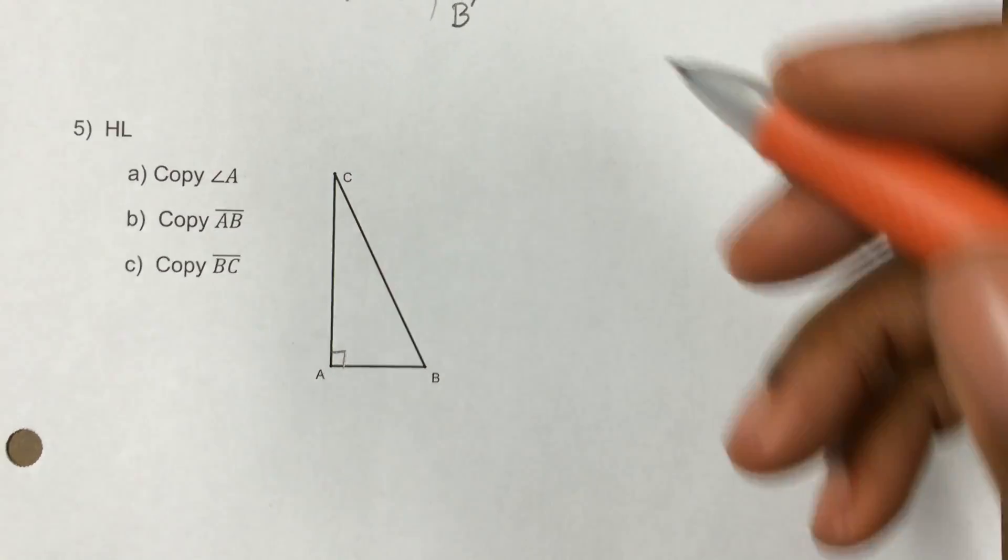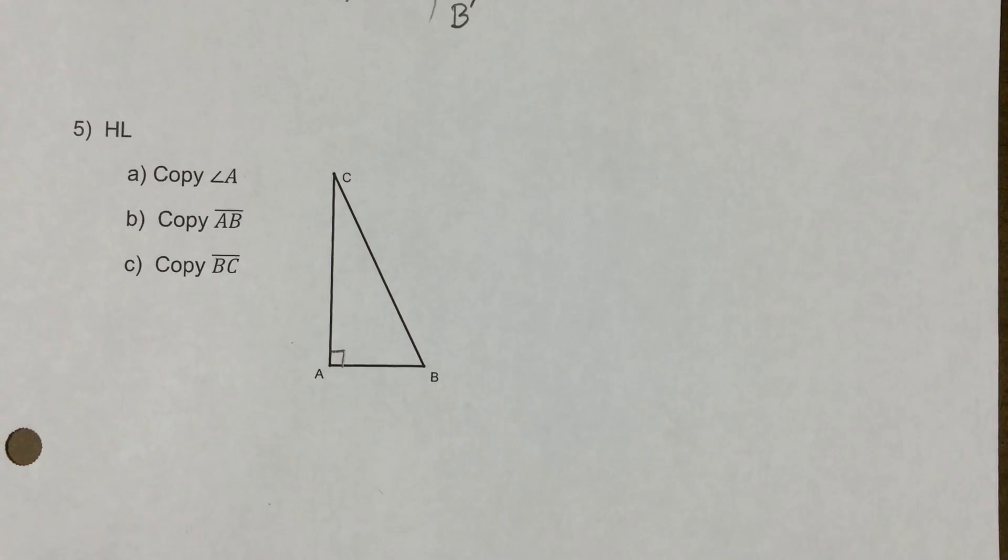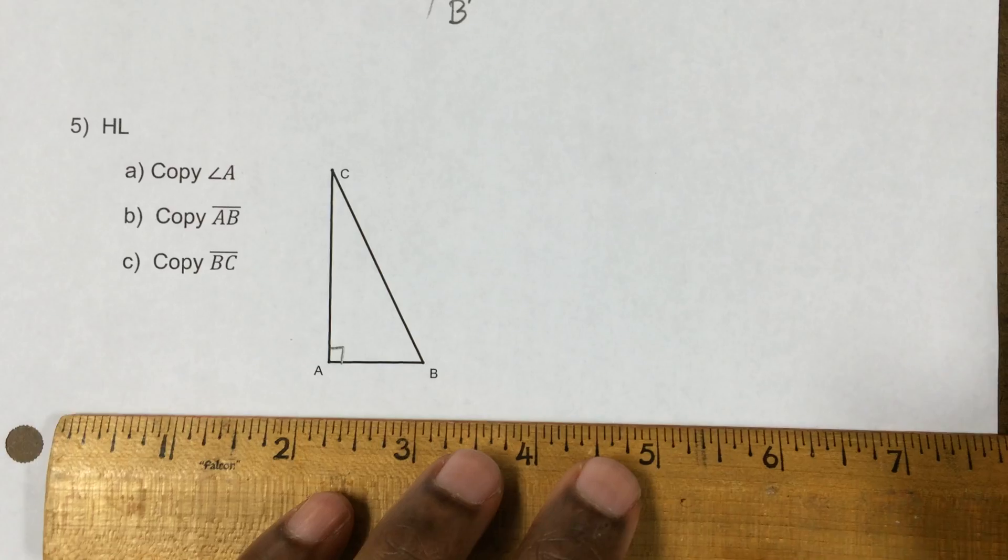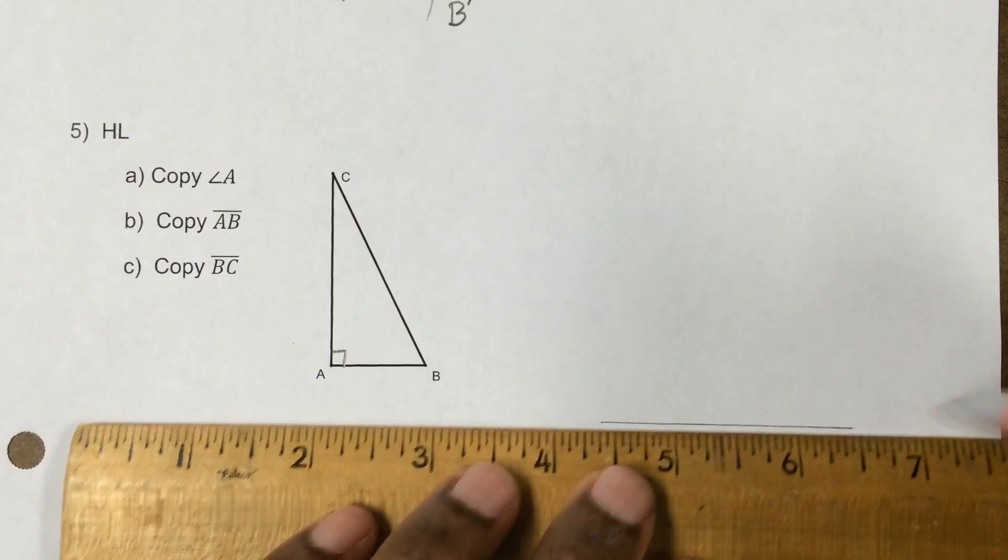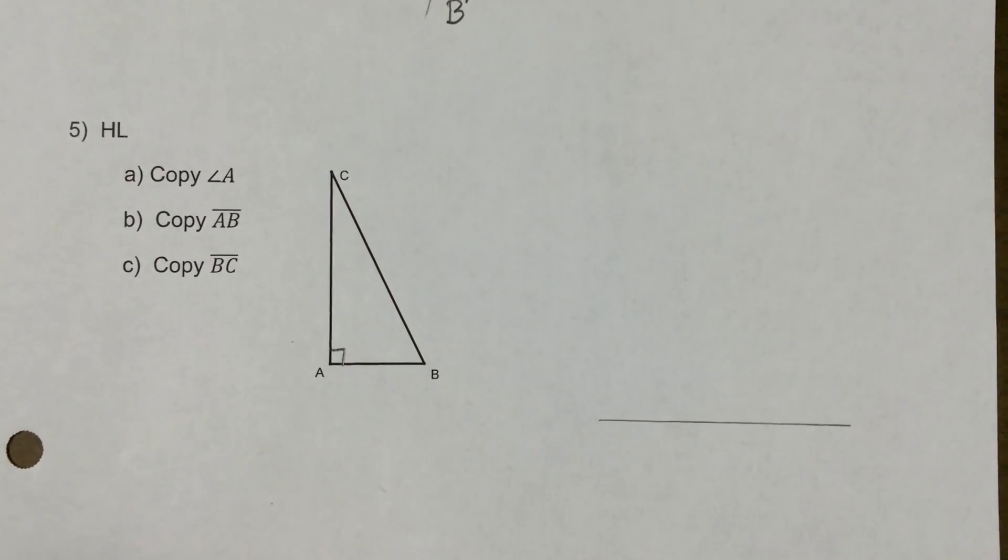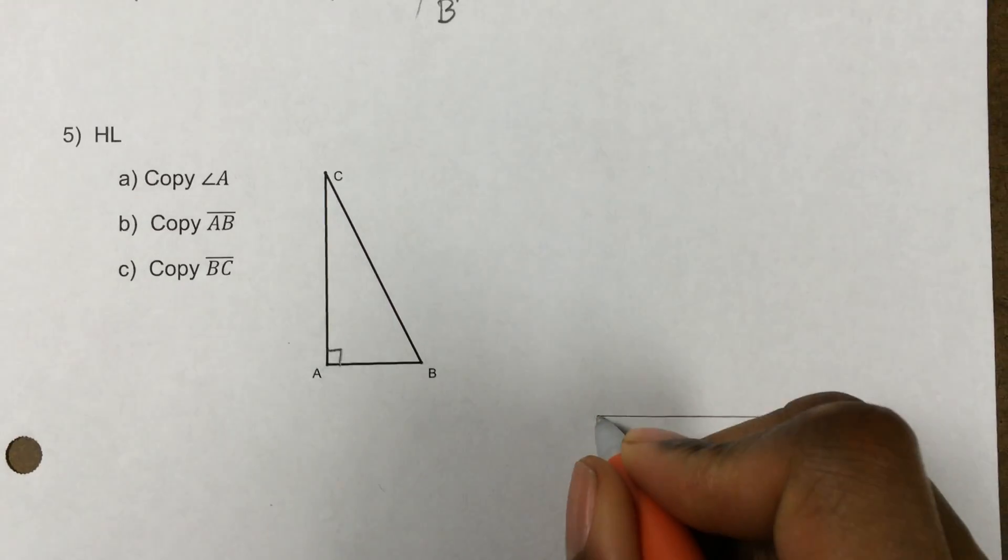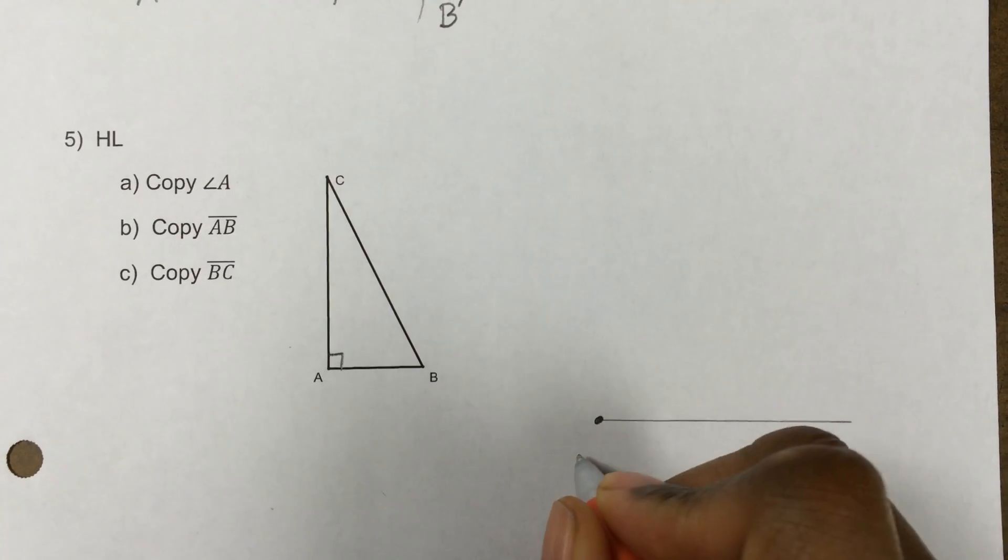So let's start by copying angle A. And of course, the way you copy an angle is start by drawing a segment that's longer than what you need. All right, I will call this spot right here A prime.